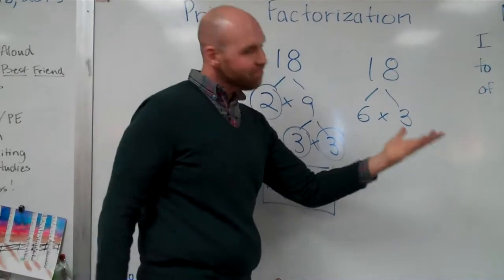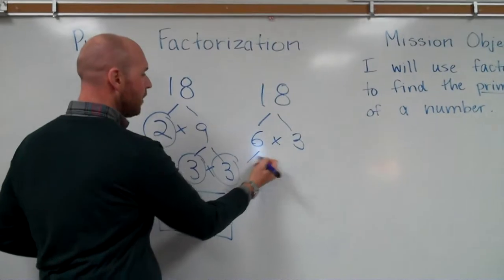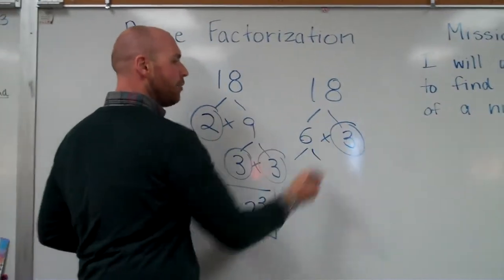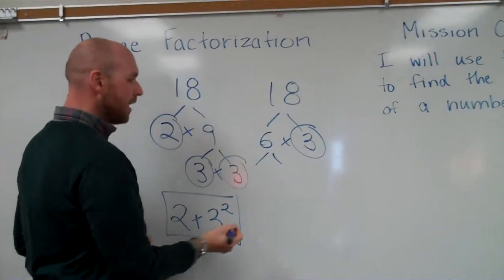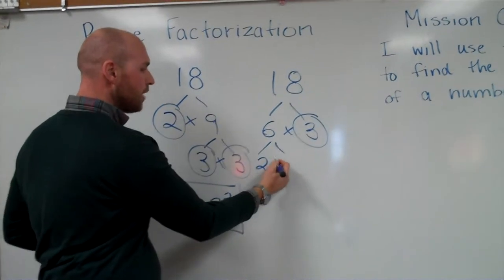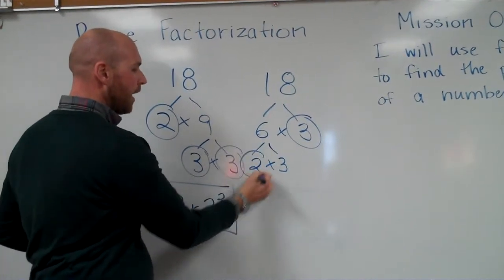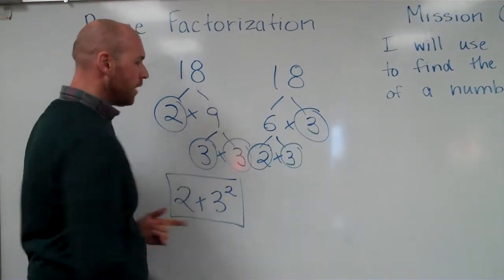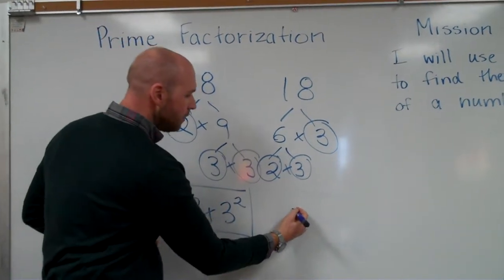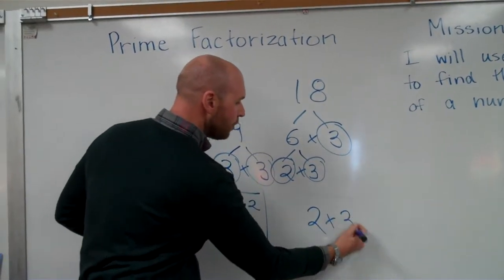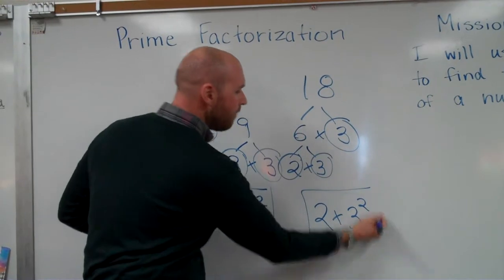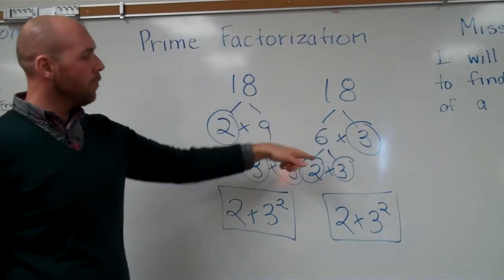Am I going to get the same over here? Let's see. Alright. 3 is already prime. How do I break apart 6? Let's try 2 times 3. Alright. I have 2 times 3 times 3. Let's write it down. 2 times 3 squared. Same factors. Different ways to get there.